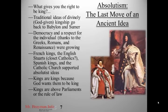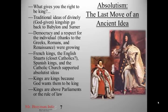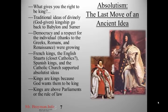This period was also kind of the end of the great period of kings. Two kings especially — James I and Louis XVI — were kind of the last kings to embody the idea of absolutism. Absolutism is an answer to what gives someone the right to be king. Traditionally, kings were kings because God wanted them to be king. These traditional ideas of divinely God-given kingship go back to Babylon and Sumer — some of the most ancient ideas about political power and political legitimacy in human history.